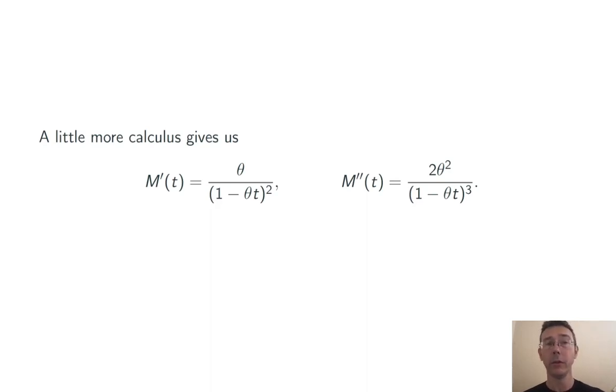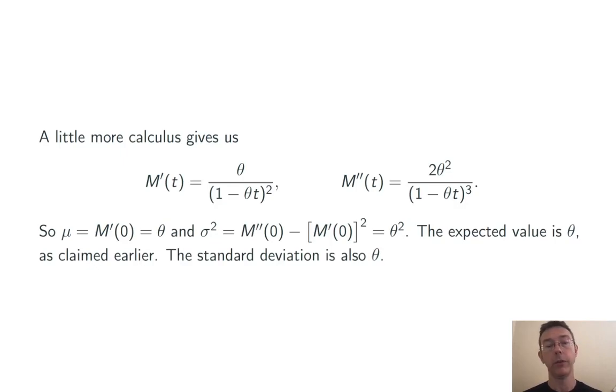So we do a little more calculus. I won't show all of that. We get the first two derivatives. We plug in 0 to each. We get that m prime of 0 is theta. That's the expected value. As I sort of hinted earlier in this vid, the expected waiting time is theta. We get that the variance is theta squared. So the standard deviation is theta as well.